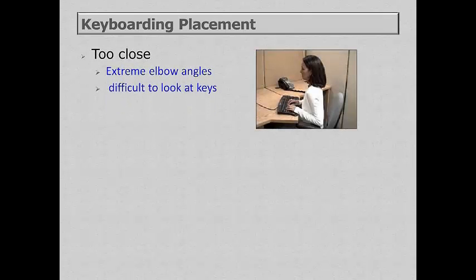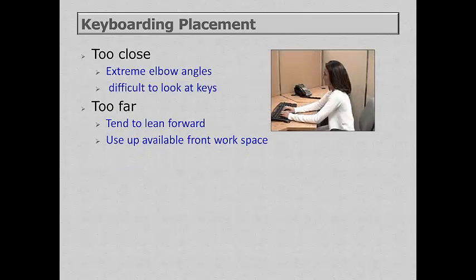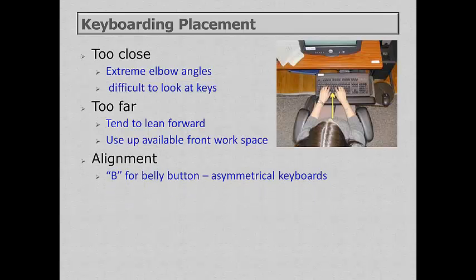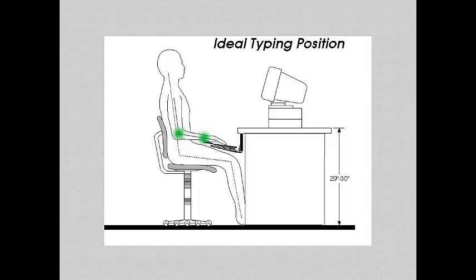If keyboard placement is too close, you get extreme elbow angles and it's more difficult to see the keys. If too far away, you will tend to lean forward and use workspace by resting arms on the table. A standard keyboard is asymmetrical by design — in general, you want to keep the B key aligned with your belly button, but doing so pushes the navigation keys and number pad further right, which in turn pushes the mouse further right. The ideal typing position shows elbows beneath the shoulders and wrists straight, with a negative keyboard tilt.